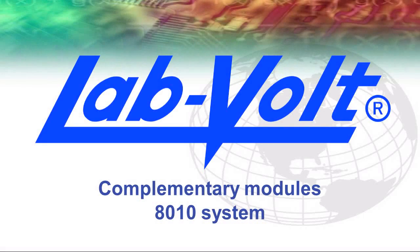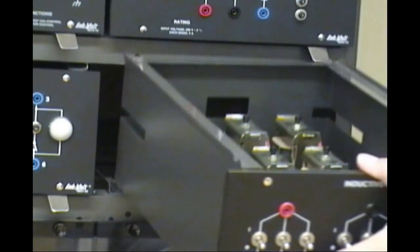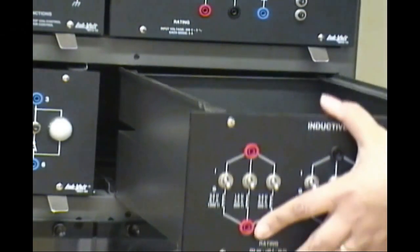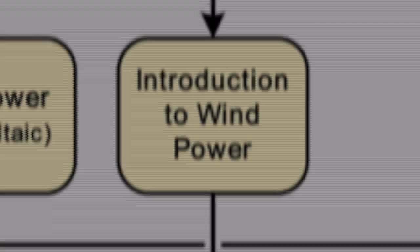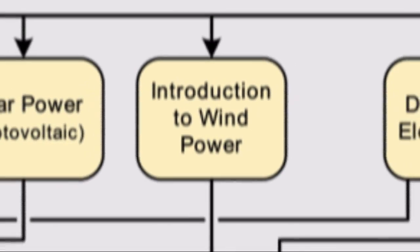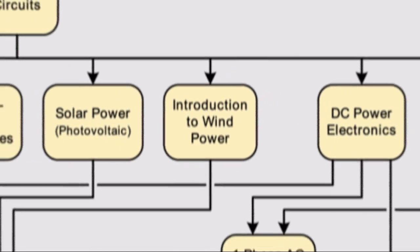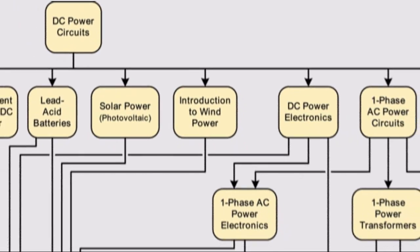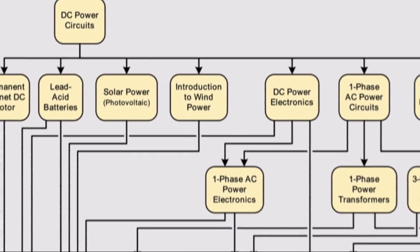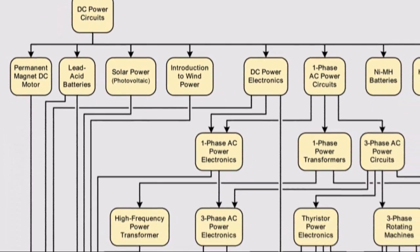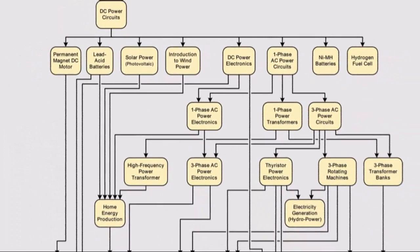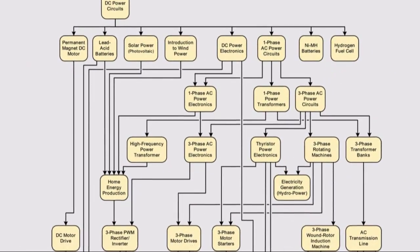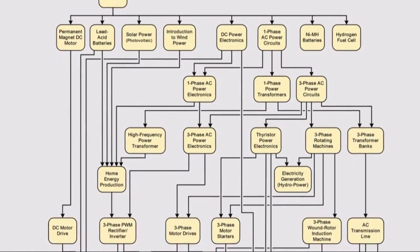LabVault's modular approach allows new equipment to be added to existing laboratories without needless duplication of equipment. The small-scale wind power electricity generation training system is a subset of LabVault's 8010 family that allows teaching of classical topics such as DC, single-phase and three-phase circuits, transformers, motors, and generators.